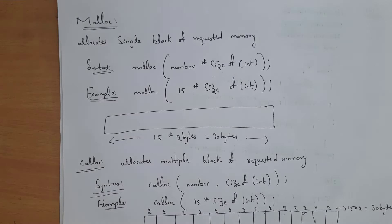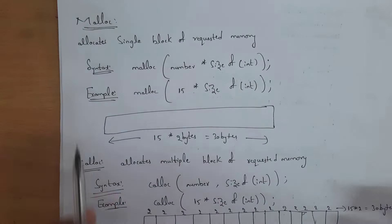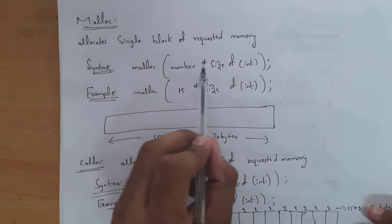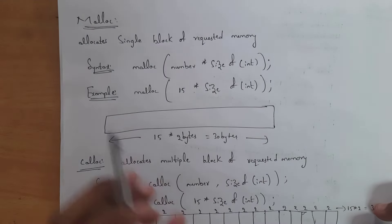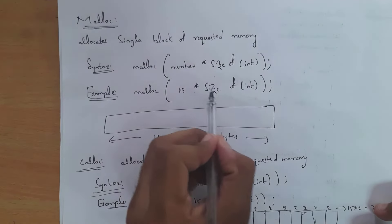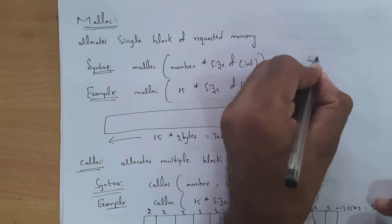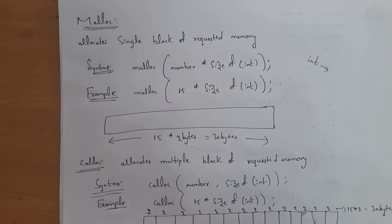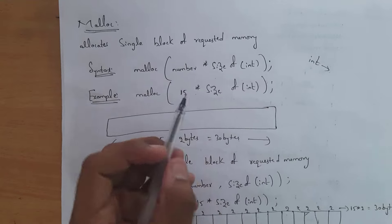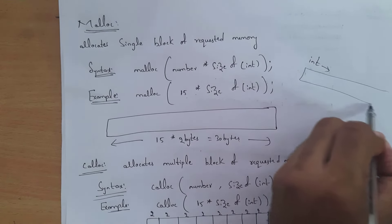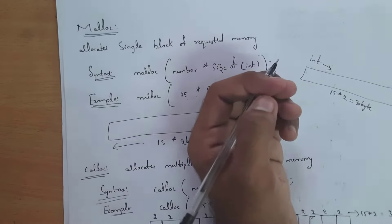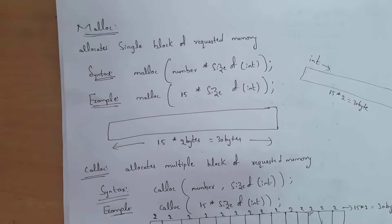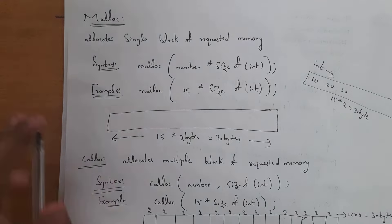First I will explain the malloc function. malloc function allocates a single block of requested memory. The syntax is: malloc(number * sizeof(int)). For example: malloc(15 * sizeof(int)). That means I am taking integer values and giving size as 15. It will create one single block and allocate size as 15 into 2, that is 30 bytes, so I can store 15 values inside this.